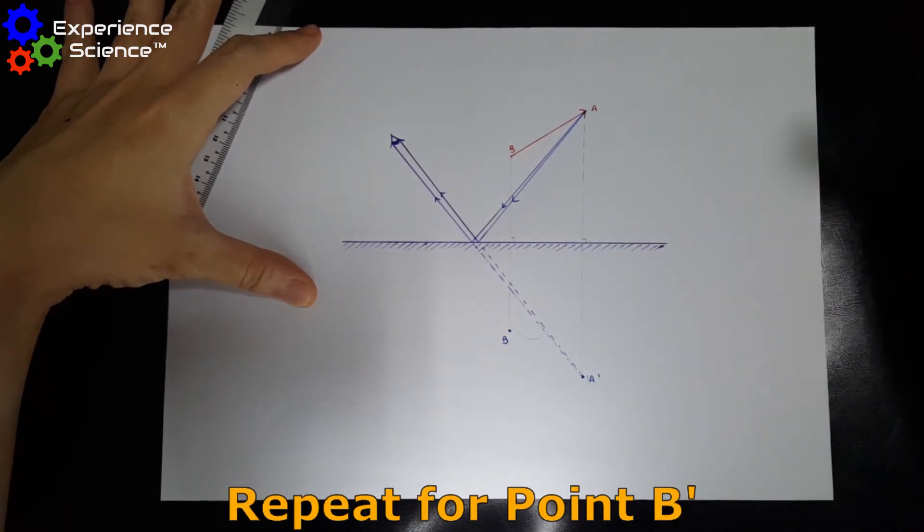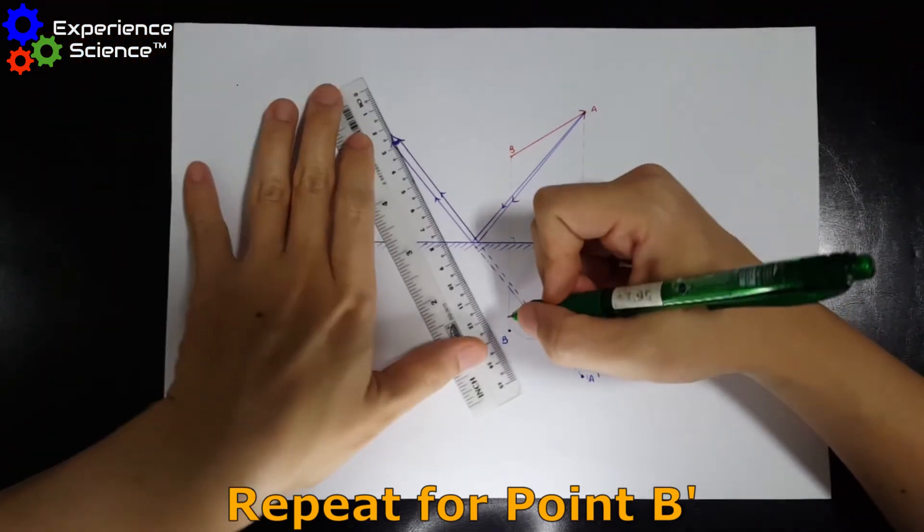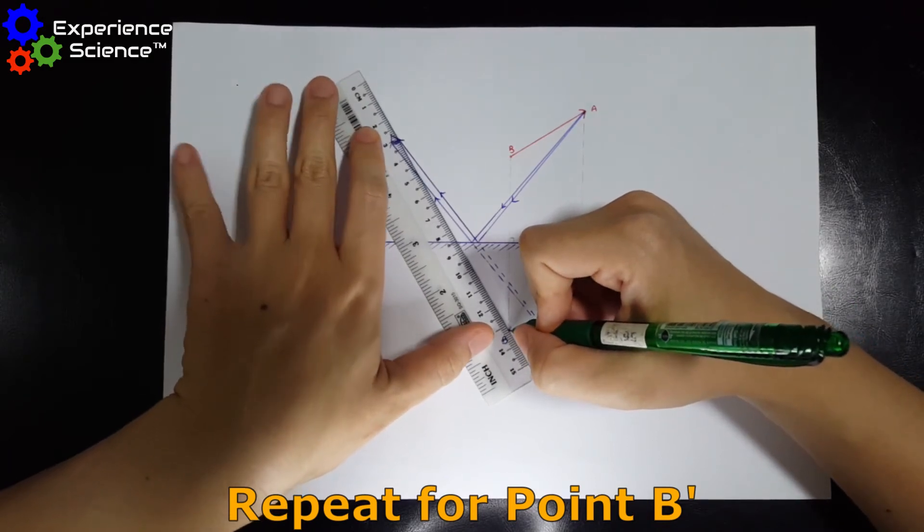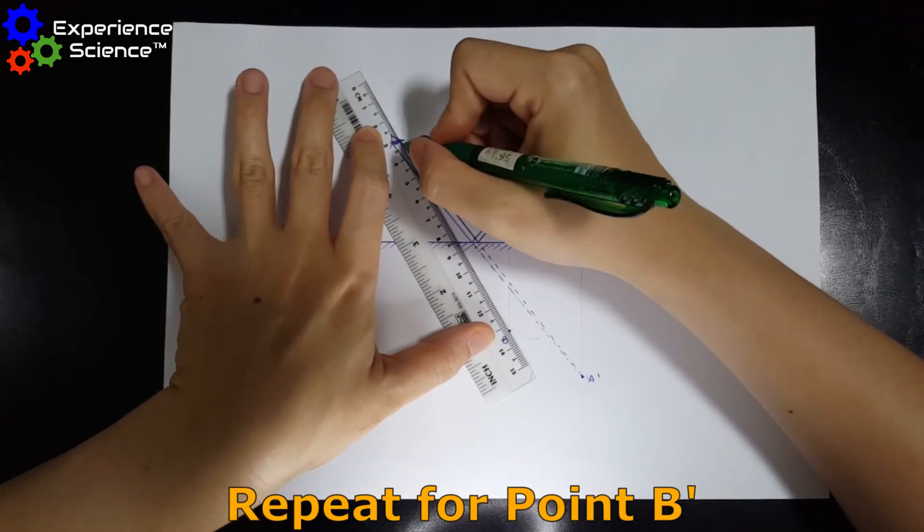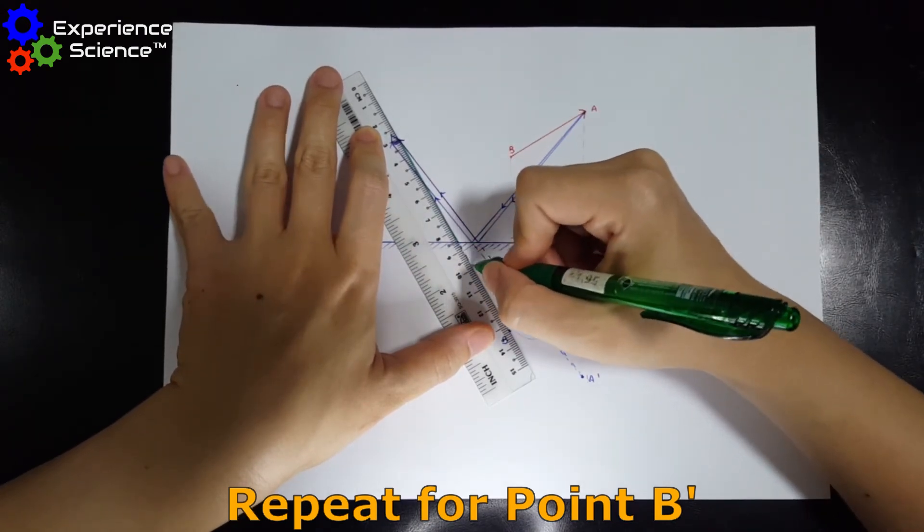Now we're going to repeat this process for B. So following the same thing, we can take B and join it to the eyes. And we draw a straight line up to the mirror, followed by dotted lines up to B.